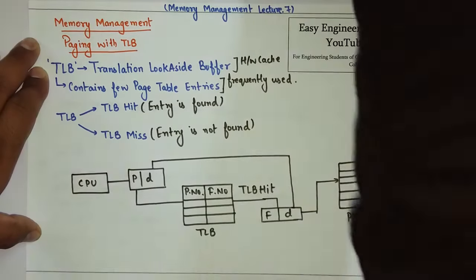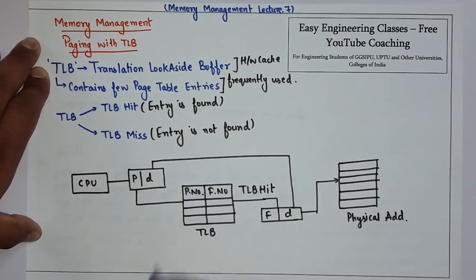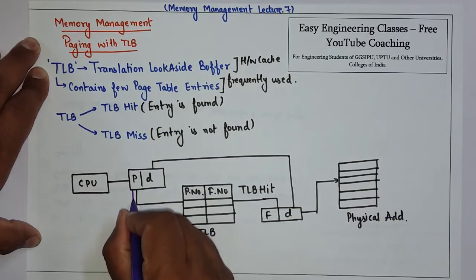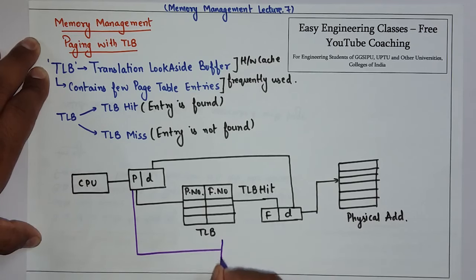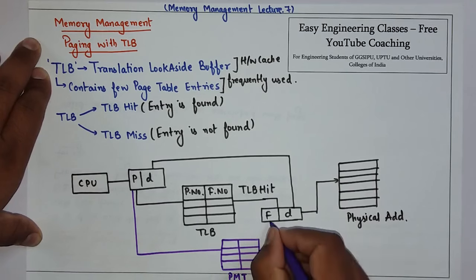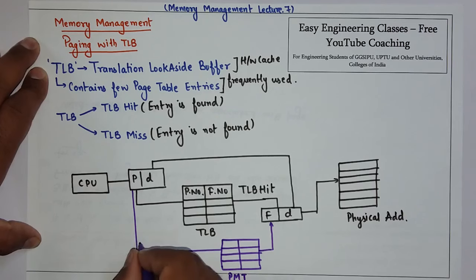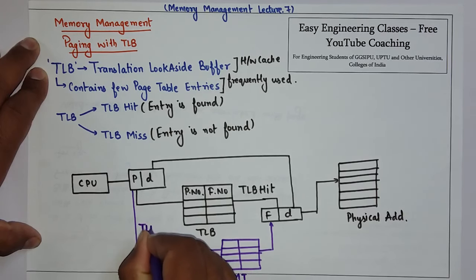Now consider when there is no TLB hit or the entry is not found in the TLB. In that case, it is checked with the page map table - the original page table that contains all entries - and the corresponding frame is found and accessed. This is the case of TLB miss.